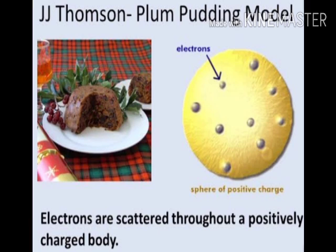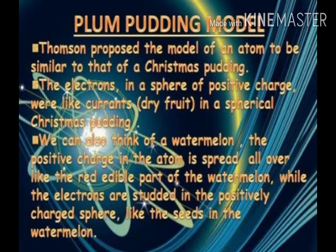Thomson proposed the plum pudding model of an atom to be similar to that of a Christmas pudding — electrons in a sphere of positive charge, like dry fruits in a spherical Christmas pudding. We can also think of a watermelon: the positive charge of the atom is spread all over the red edible part, while the electrons are embedded in the positively charged sphere like the seeds in the watermelon.